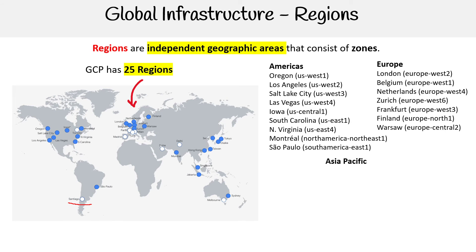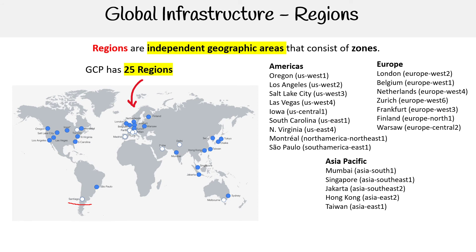In Asia Pacific, we have Mumbai, Singapore, Jakarta, Hong Kong, Taiwan, Tokyo, Osaka, Sydney, and Seoul.